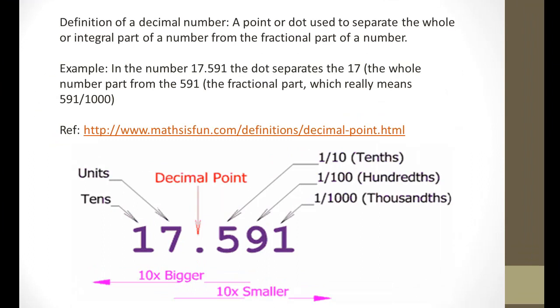In the example below, the number 17 and 591 thousandths, the dot separates the 17, which is the whole part of the number, or the integral part, from the 591, which is the fractional part of the number. And it really means 591 thousandths.